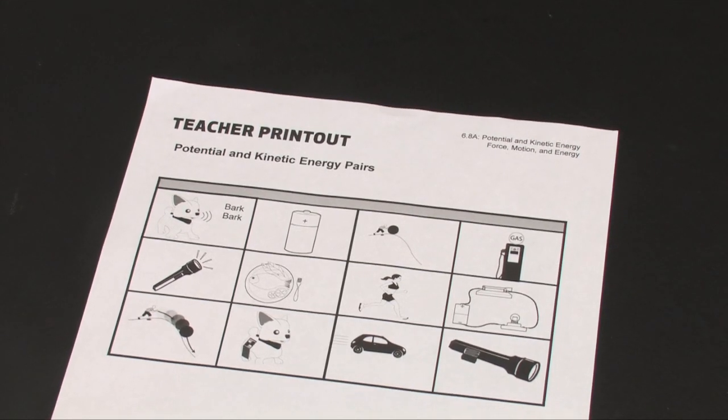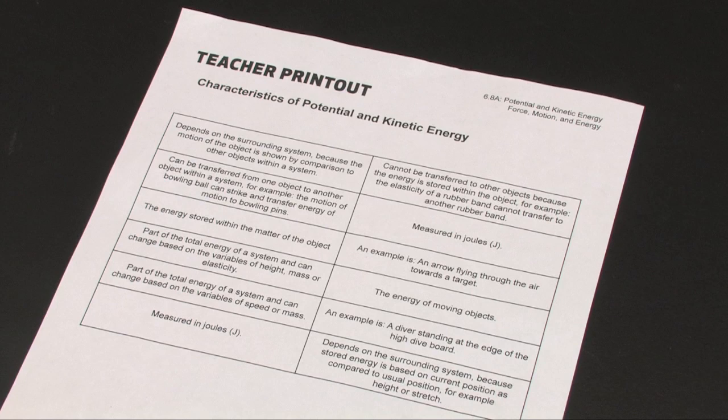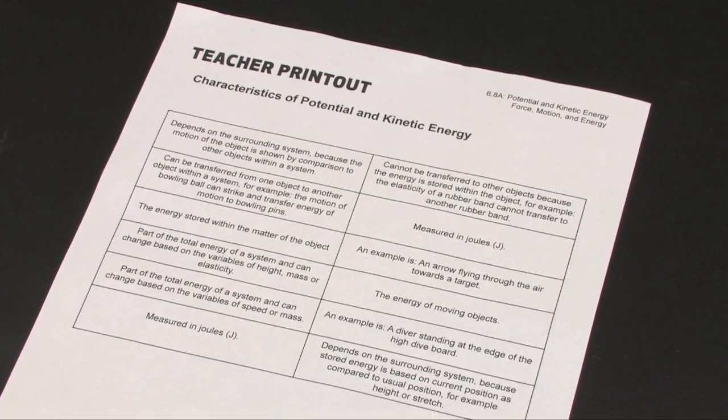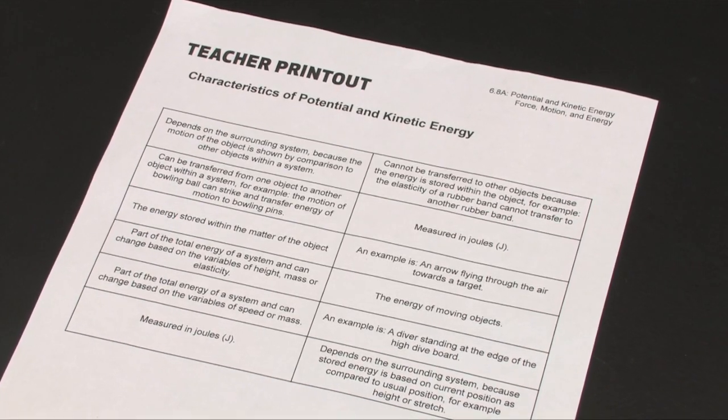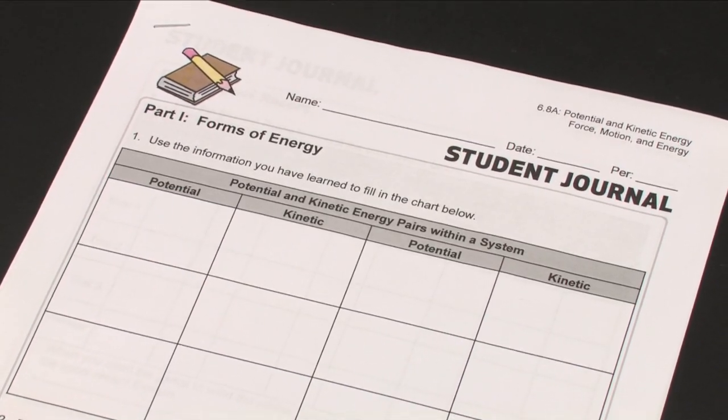Print one teacher printout potential and kinetic energy pairs for each student in the class. Print one teacher printout characteristics of potential and kinetic energy for each student. Also print one student guide and one student journal for each student.